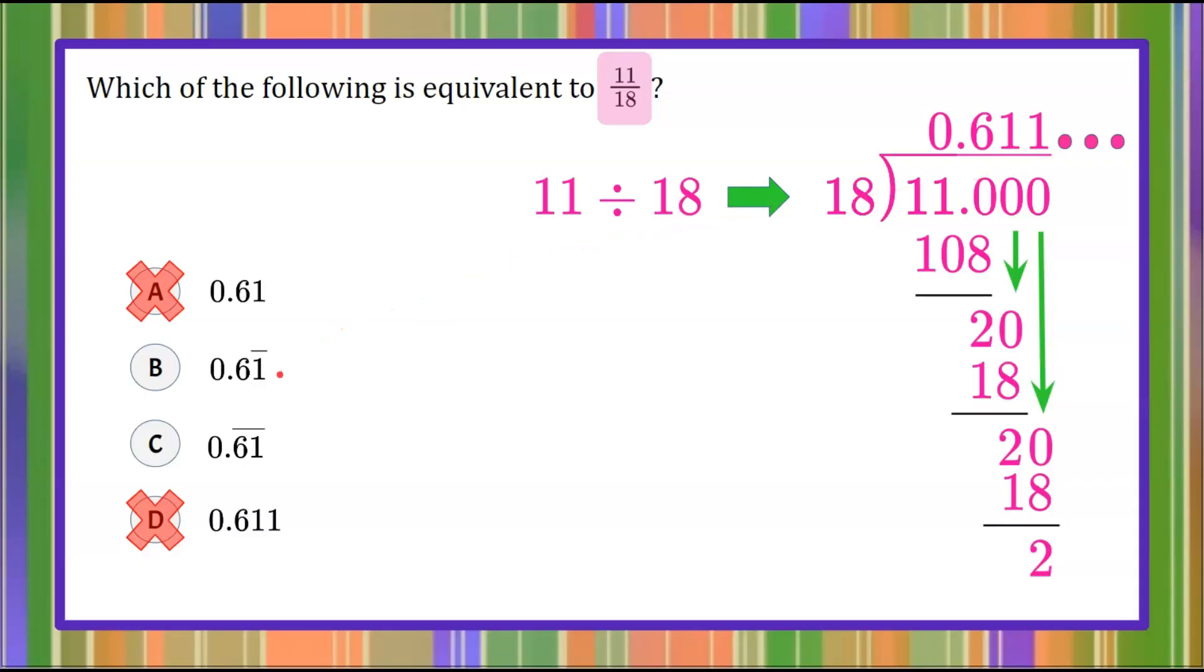Now we're going to consider choices B and C. In choice B, there's one digit that repeats, the 1. In choice C, there are two digits that repeat. This would be 0.616161. Here we can identify that we only have one digit that repeats. It's the 1 that is going to continue to repeat.